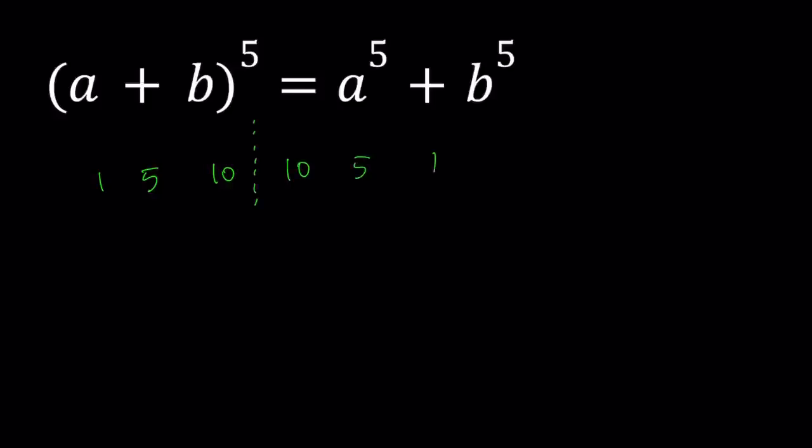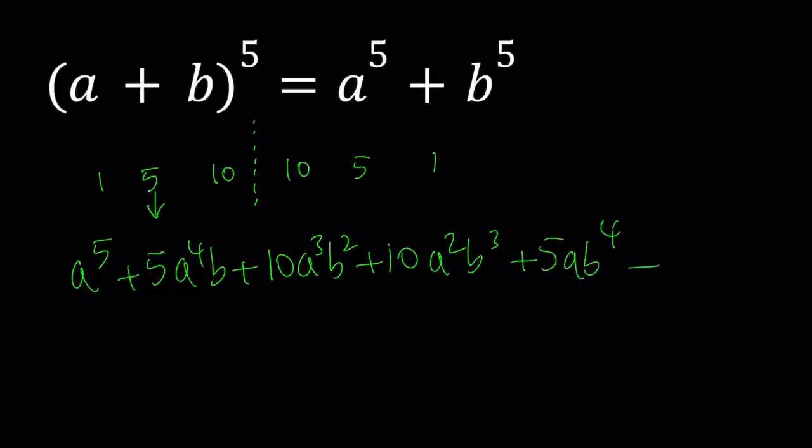Let's go ahead and expand it. By the way, these are coefficients, but the powers also play a role. We start with the highest power of a and with the lowest power of b, which is b to the power of zero, and the b is vice versa. So start with b to the zero and go up. Here's how it goes: a to the fifth power plus 5a to the fourth b plus 10a cubed b squared plus 10a squared b cubed plus 5ab to the fourth power plus b to the fifth power.